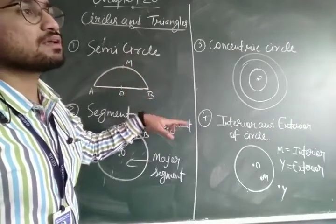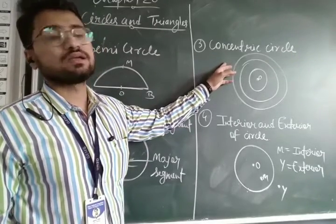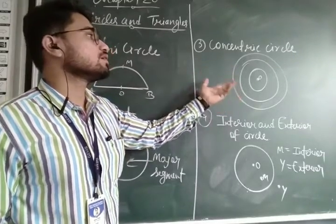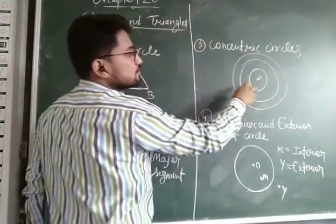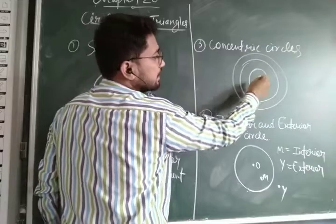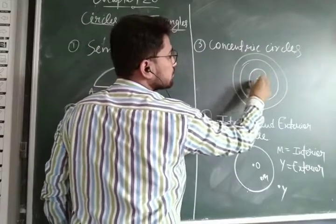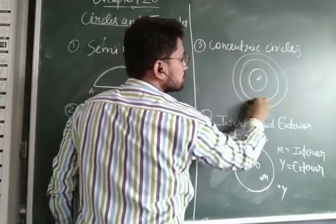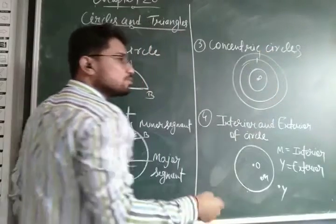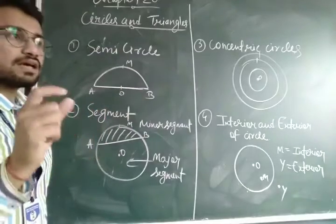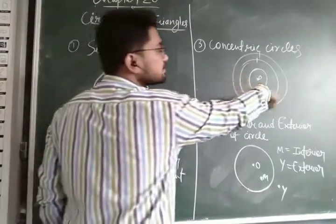Now I am going to explain concentric circles. What is a concentric circle? These are the concentric circles. The circles which have the same center — this circle and this one and this one all share the same center — so the circles which have the same center are known as concentric circles.